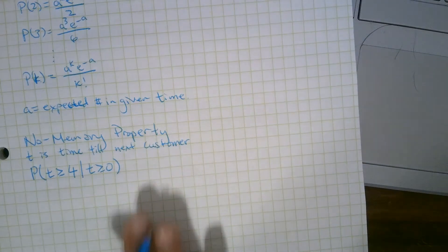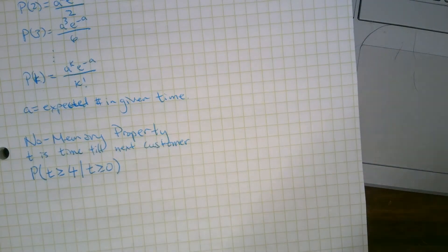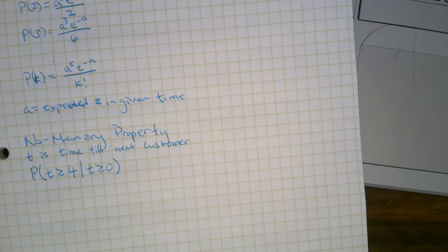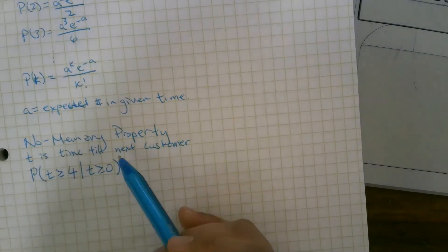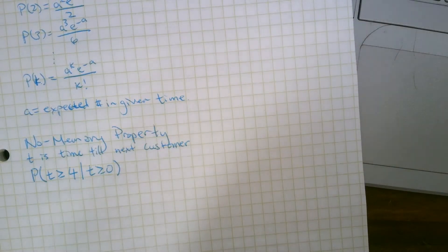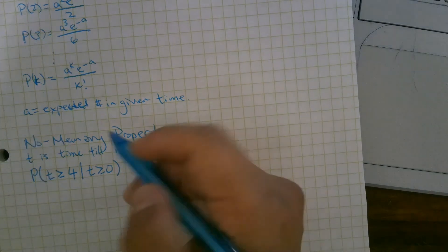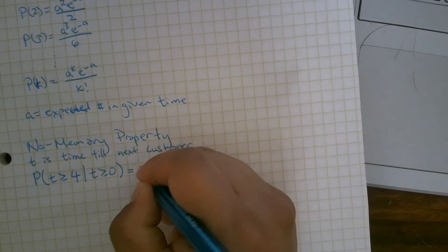So we don't necessarily need to write that, but I'm setting that up for future notation. Okay, well, if we expect A customers in one unit of time interval, then this probability is going to be E to the negative 4A.